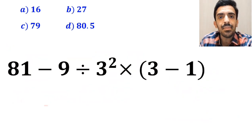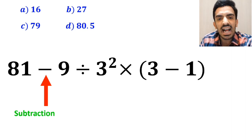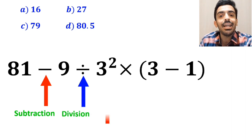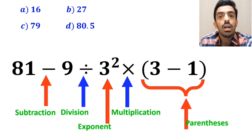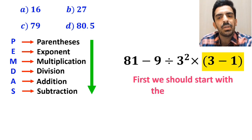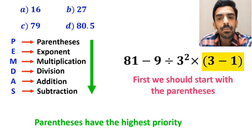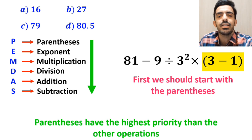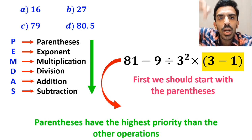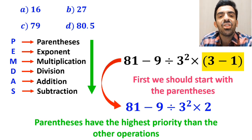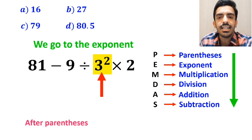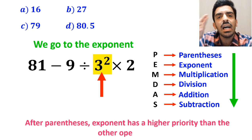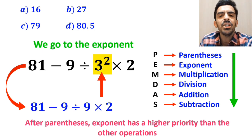As you can see in the image, in this expression, first we have a subtraction sign, then a division sign, then an exponent, then a multiplication, and finally parentheses. According to the PEMDAS rule, first we should solve the parentheses because they have the highest priority. So we can write this expression as 81 minus 9 divided by 3 squared times 2. In the next step, we go to the exponent, because after parentheses, the exponent has higher priority. So this expression simplifies to 81 minus 9 divided by 9 times 2.